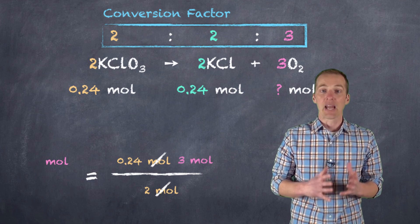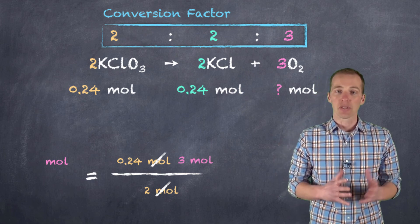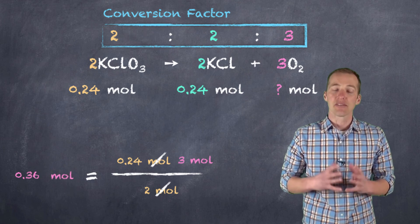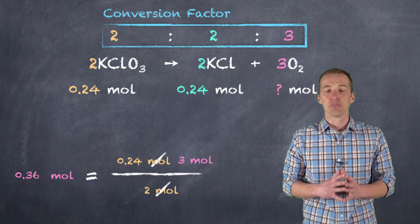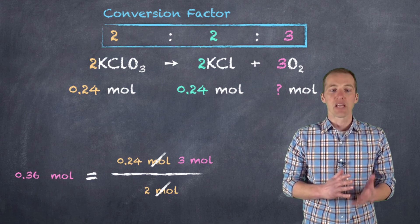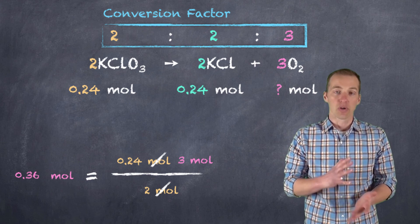Ultimately, we get now three moles up in the numerator. We multiply it by 0.24 and divide by two moles. And what we're going to get is a value of 0.36 moles of oxygen. And notice that two to two to three is the same as 0.24 to 0.24 to 0.36.